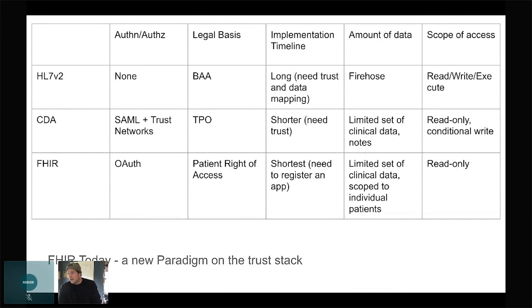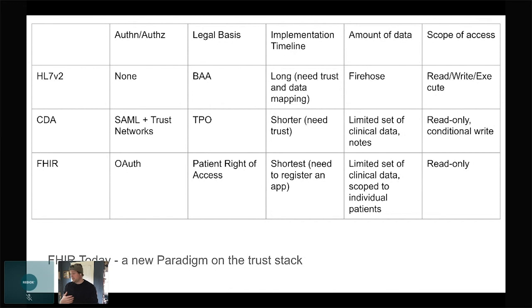With networks and exchange-type things, there's another clause under HIPAA for treatment, payment, and operations — people refer to that as TPO. There's inherent trust among parties who have legitimate reasons to access the data. With HL7 version 2, you're typically signing a business associate agreement with the health system and essentially becoming part of their internal network. The implementation time with FHIR is very short — mostly just registering in a portal, getting a client ID and secret, and using off-the-shelf OAuth libraries. With CDA you need time for trust-building, and with HL7 version 2 there's a security piece to build plus more data mapping.